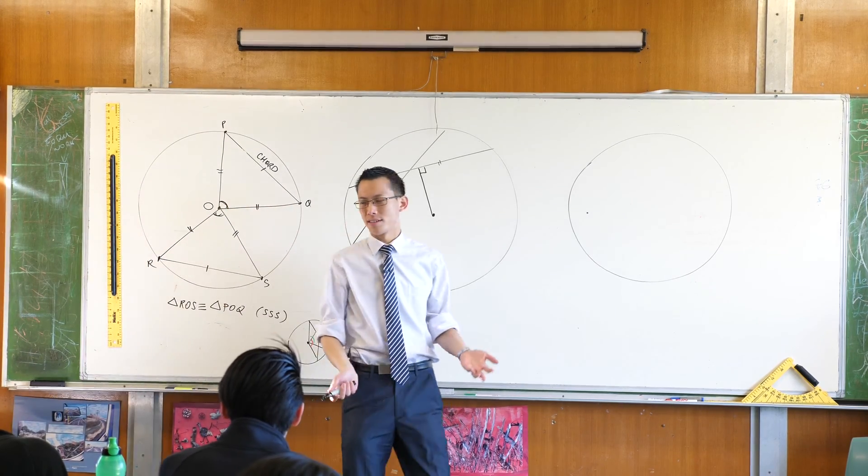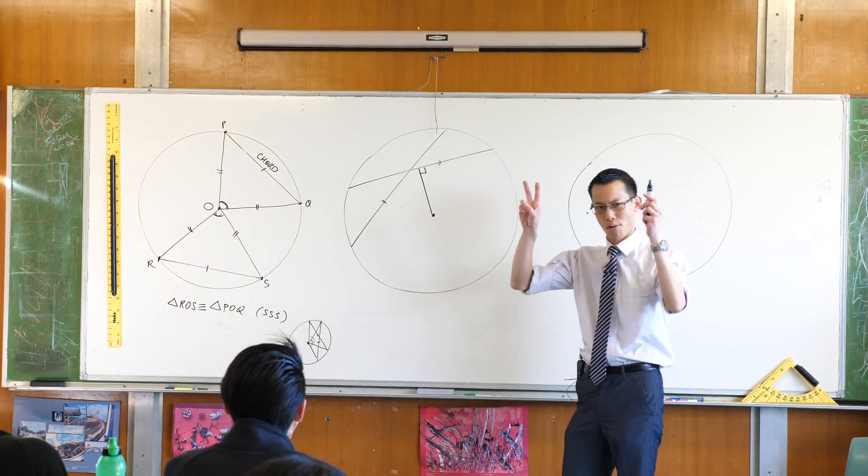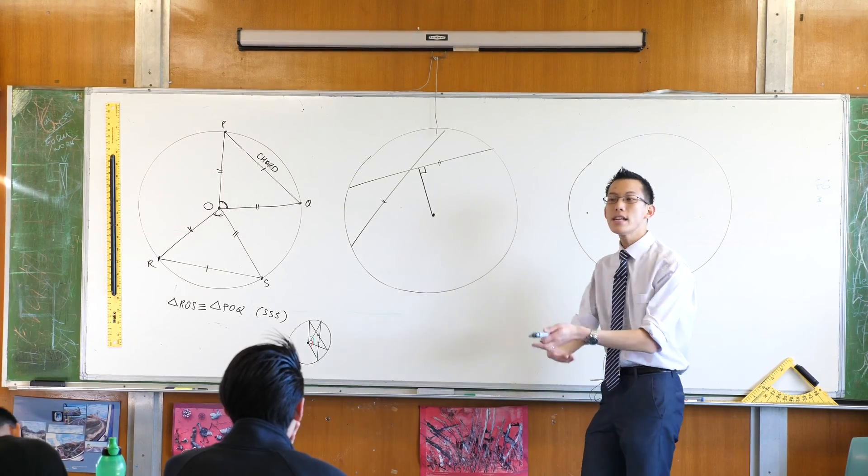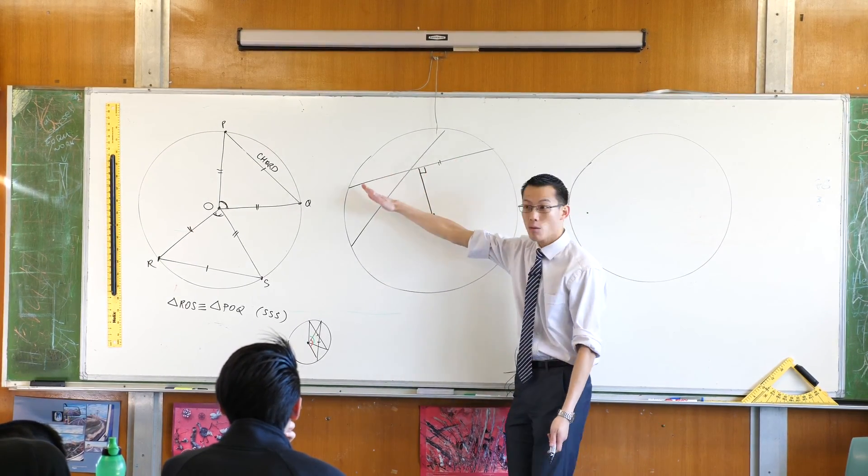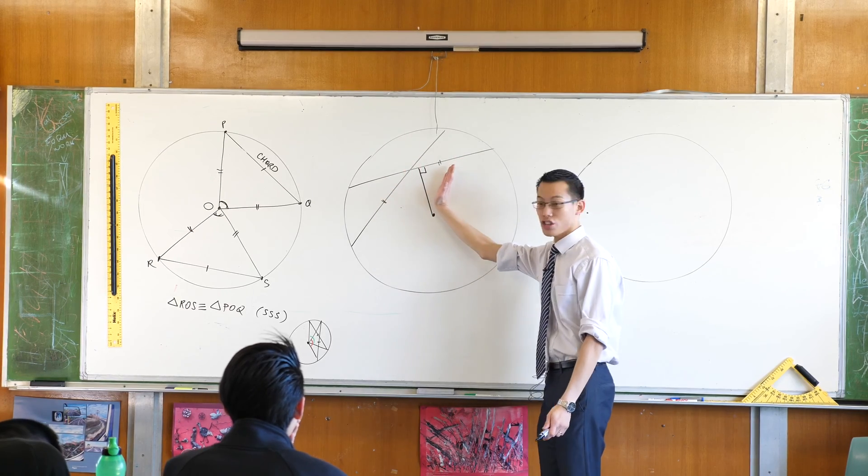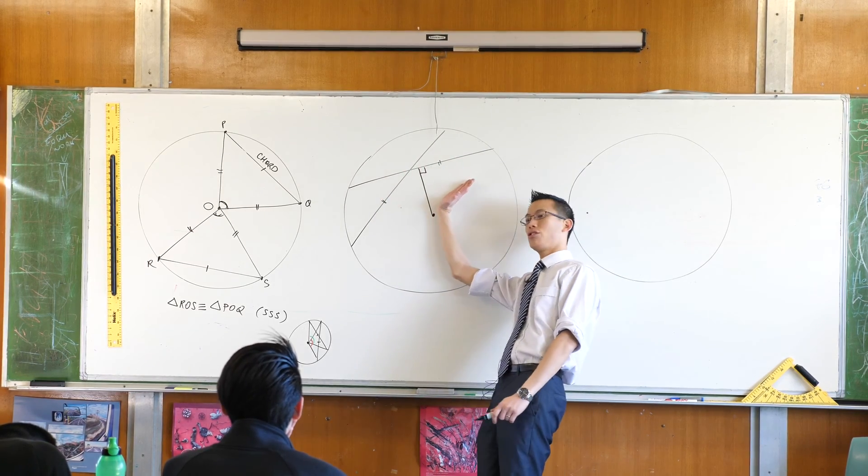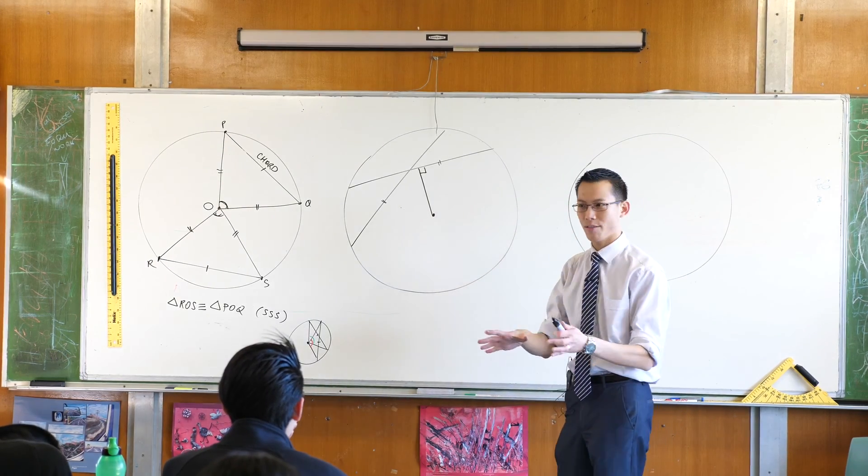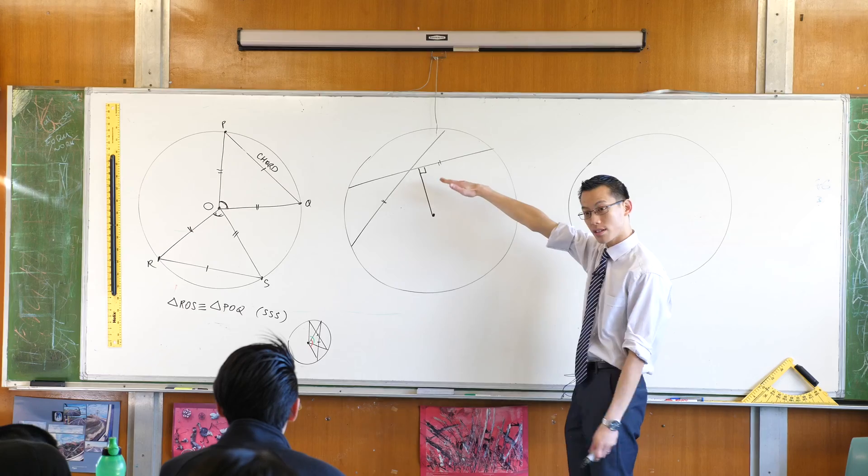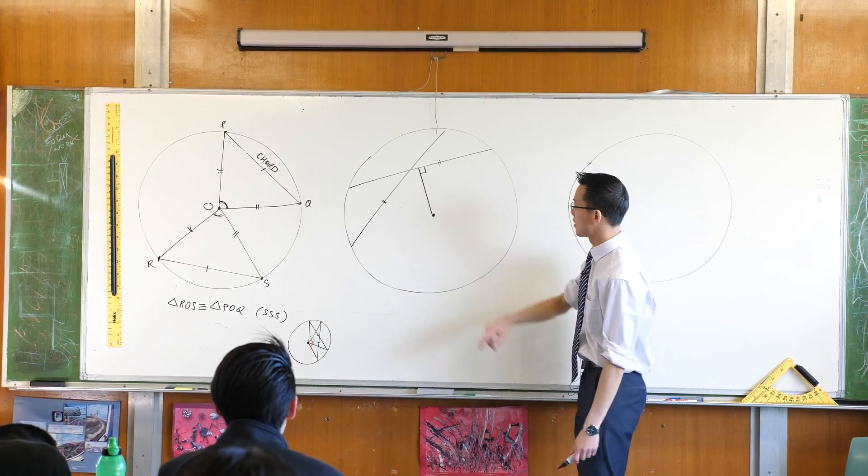But why do we want the shortest distance? We need a consistent way to describe this distance, because if I said you can go anywhere along this line, then here you'd get a different length, and here you'd get an even longer length, and on and on. So I need something we can all agree, we can be consistent on, so we just say the shortest distance, which is perpendicular.